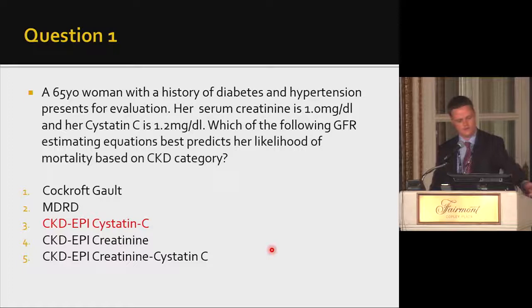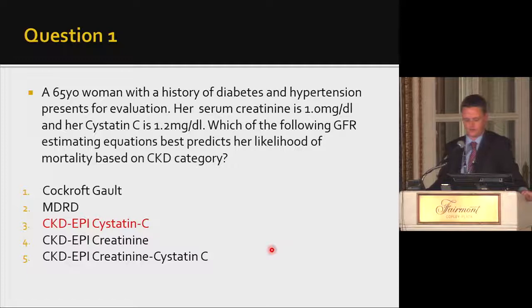So the answer to the opening question is the CKD-EPI cystatin C equation, likely because its non-GFR determinants are associated with mortality. If the question had been end-stage renal disease, the answer would have been CKD-EPI creatinine, because it is not dependent on inflammation and other factors which, while they increase mortality risk, are not associated with ESRD risk beyond eGFR alone.